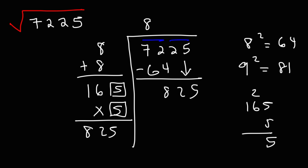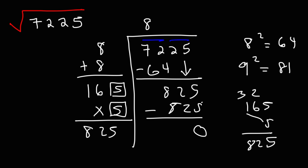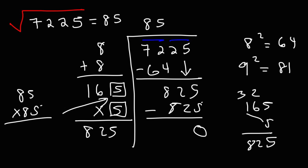5 times 6 is 30 plus 2, that's 32; carry the 3. 5 times 1 is 5 plus 3, we get 8. So this gives us the 825 that we need, giving us a remainder of 0. Since we have a 5 in the box, that 5 goes up top. The square root of 7,225 is 85. To check your work, you can multiply 85 by 85 and you'll get 7,225. That's how you use the long division method to find the square root of a perfect square.